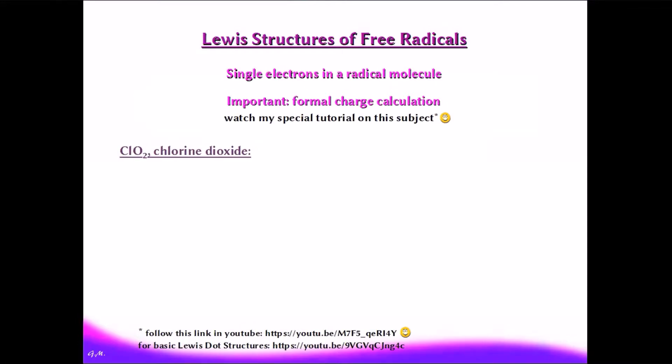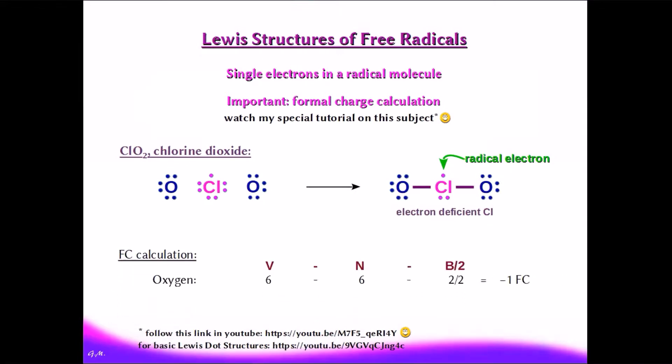Let me illustrate this with an example, chlorine dioxide. With chlorine as the least electronegative element in the center, we obtain this structure with a radical electron plus an unbonded electron pair on an electron-deficient chlorine atom. Formal charge calculation gives a negative formal charge for each oxygen and a plus two value for chlorine. The non-zero charges on all atoms incite us to look for a better solution for the structure.